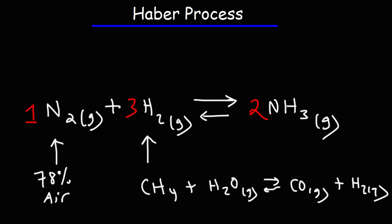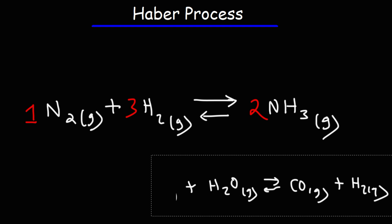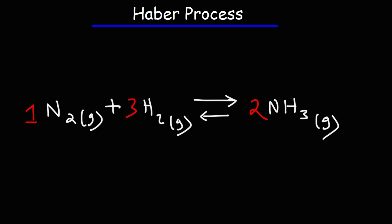When we put nitrogen and hydrogen gas in a reaction vessel under the right conditions, it can produce ammonia. We're going to talk about those conditions in this video. Now this reaction is an exothermic reaction — it releases heat. The enthalpy is negative 92 kilojoules per mole.